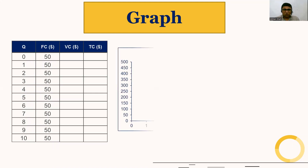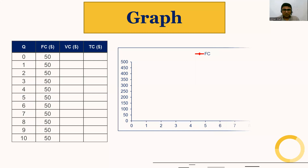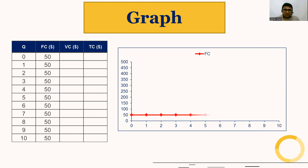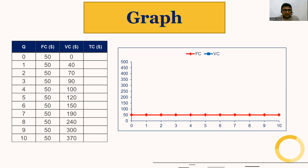Let's understand this with the help of a graph. Here you can see fixed cost is constant — it is $50. On the x-axis we have quantity, on the y-axis we have cost. The fixed cost curve is horizontal and parallel to the x-axis.